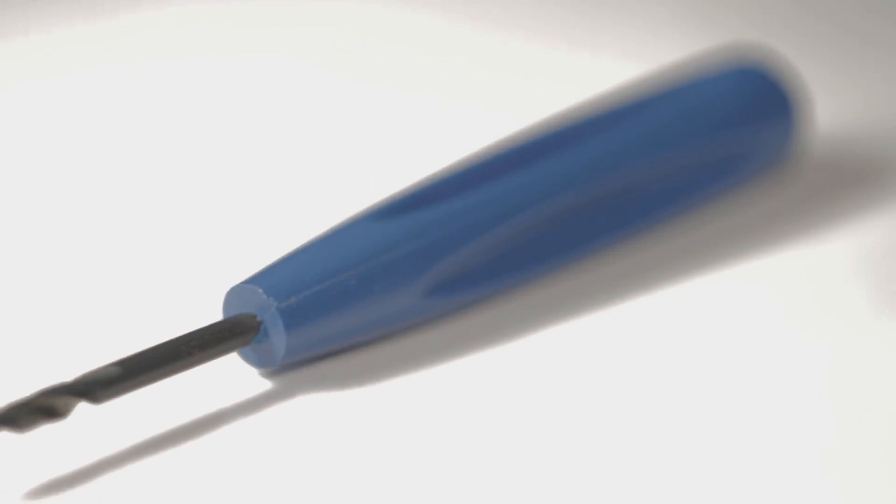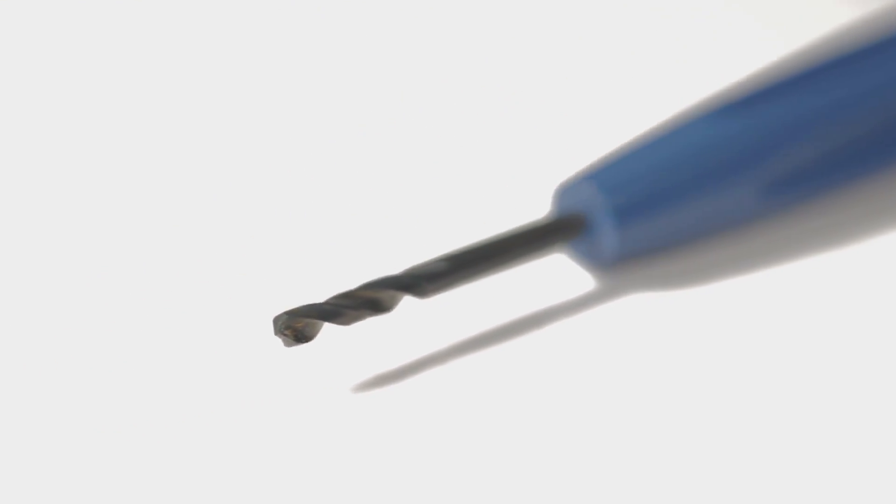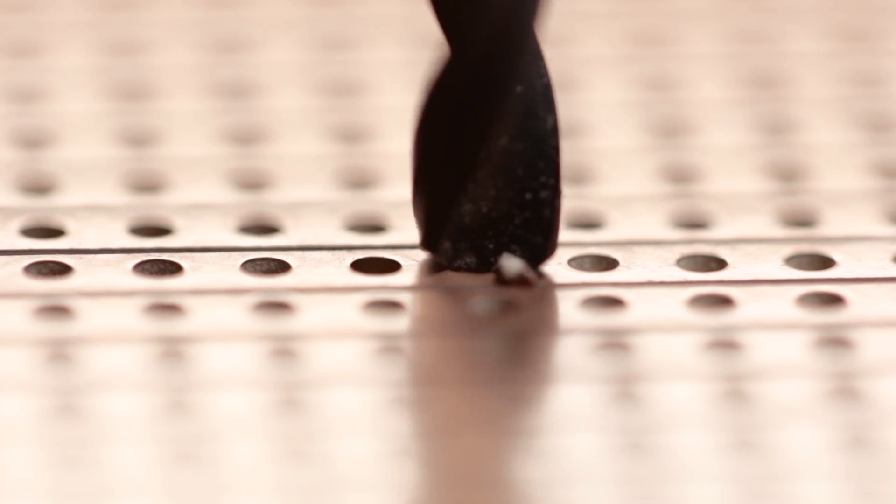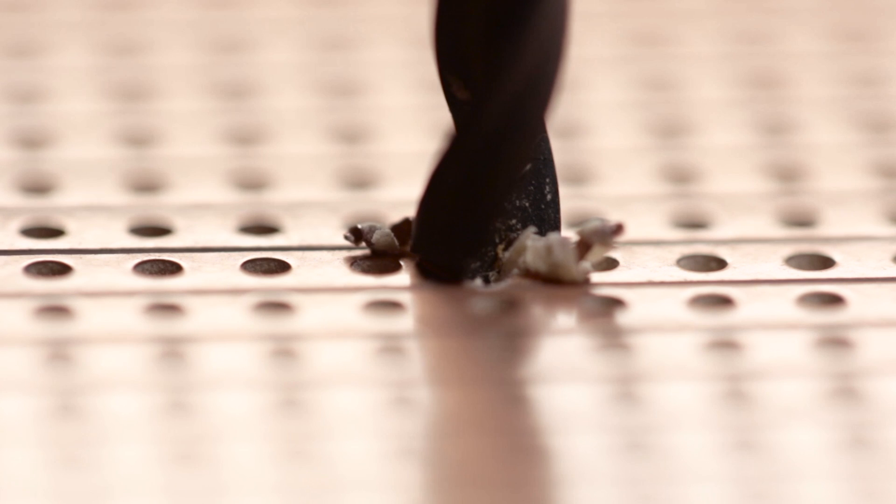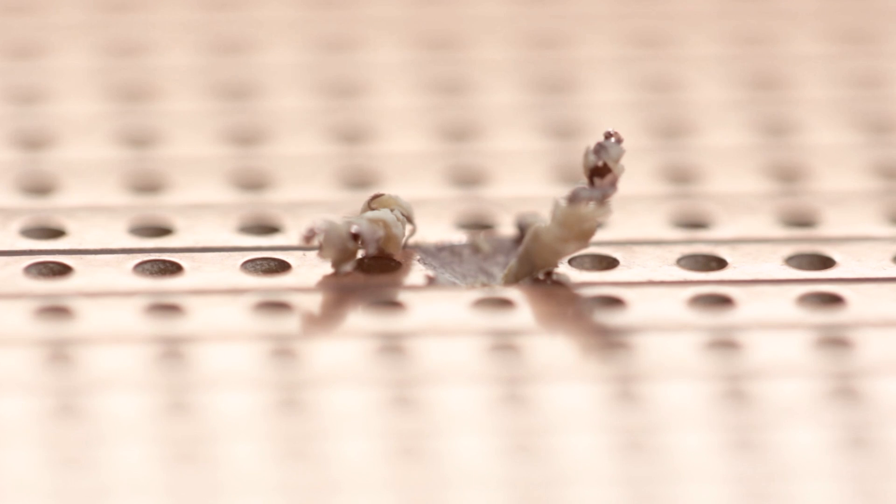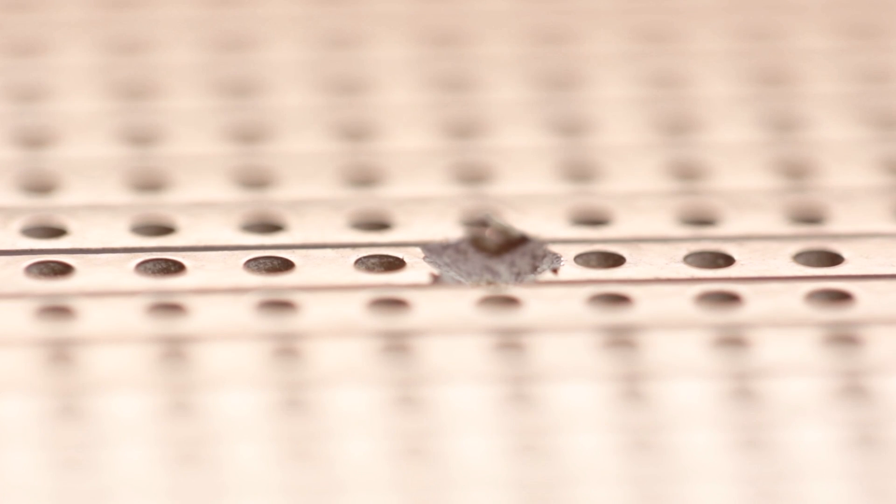The copper strips can be broken by using a drill bit tool to cut through the copper. Care has to be taken when doing this to remove all of the copper or the break won't be complete. Equally be careful not to apply too much pressure or the drill will cut through the board which can split it.